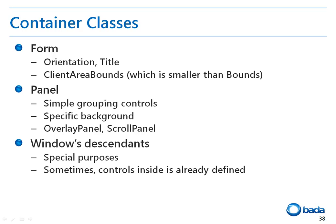A Form class has a title and provides functionality to change the UI according to the orientation of the mobile phone. The Panel class basically groups multiple controls, allows a specific background to be set for the entire group, and has special child classes such as Overlay Panel and Scroll Panel.